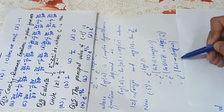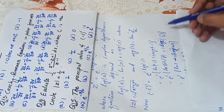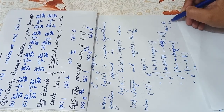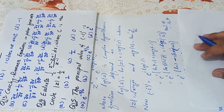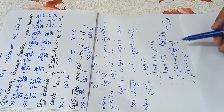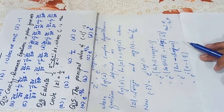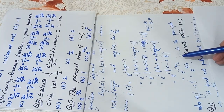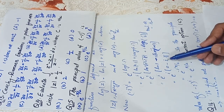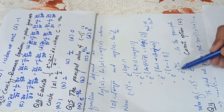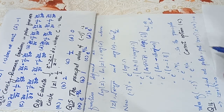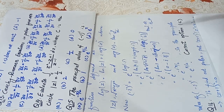This becomes e^(i · [ln(1) + i·tan⁻¹(−∞)]). Since tan(−θ) = −tan(θ), we take the minus outside: tan⁻¹(∞) = π/2, so arg(−i) = −π/2. Thus we get e^(i · (−i·π/2)) = e^(−i²·π/2). Since i² = −1, the answer is e^(π/2). The correct option is C.